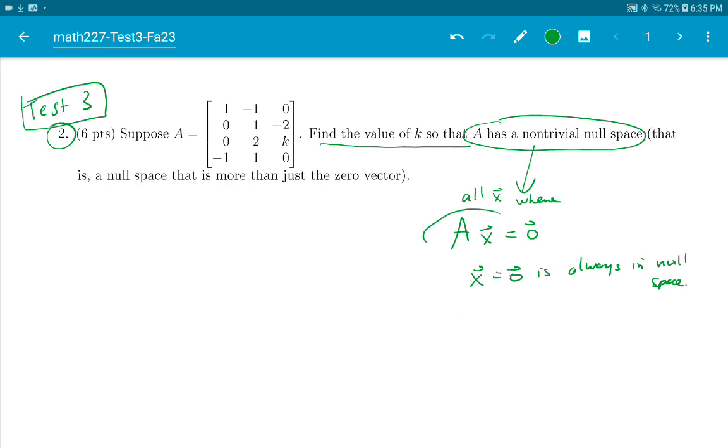Well, really what we just have to do is find all solutions to this. And to make sure it has a non-trivial null space, we have to make sure there's at least one free variable. So for non-trivial null space, we need a free variable.